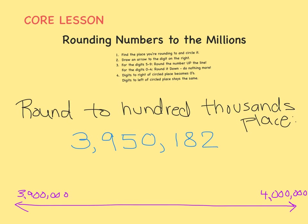Well, find the place you're rounding to and circle it — the hundred-thousands place. Look to the right for what to do. I see a 5, so that means the 9 is going to round up. The 9 rounds up to a 10, but because we can't have two digits in one place, that 1 will have to be added to the millions place. 1 plus 3 equals 4, and everything to the right becomes a zero.